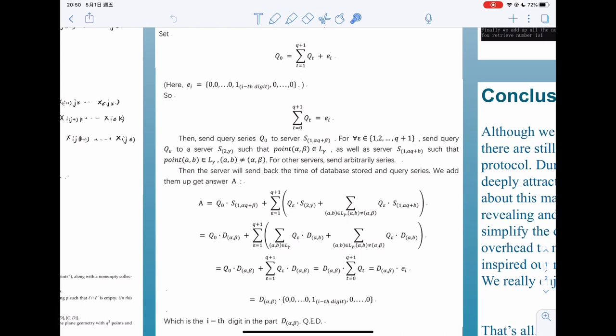That means we are going to send a query to a line and each digit on the line except for the αβ point.